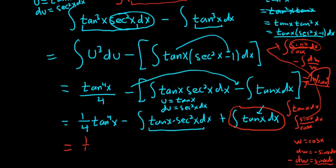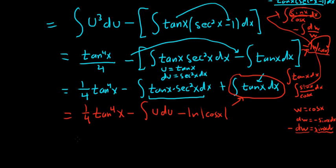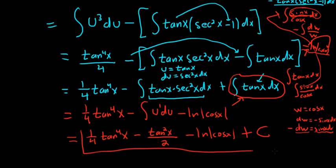This is equal to one-fourth tangent to the fourth of x minus, and so here we have u du. What a problem. It looked really innocent. And then this one here we said was negative ln absolute value cosine x. I'll hold off on the c to the very end. Almost there. So this is finally, this is equal to one-fourth tangent to the fourth of x minus, using the power rule, you get u squared over 2, but u is tangent. So it's tangent squared x over 2 minus the natural log of the absolute value of cosine x. And now since we've integrated everything, I'll go ahead and add the c at the end. So that is the final answer.